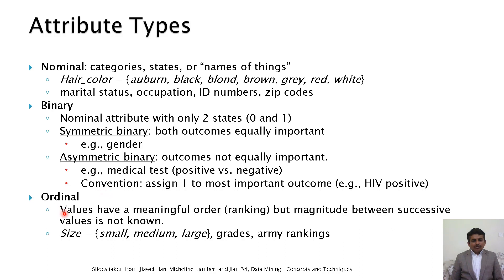Next is ordinal. Ordinal values have a meaningful order, a ranking, but the magnitude between successive values is unknown. For example, a size attribute with values small, medium, or large; grades of students; or army ranking — all these are ordinal attributes.